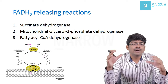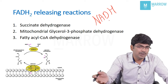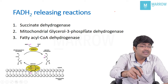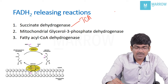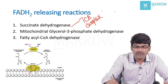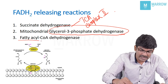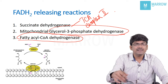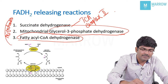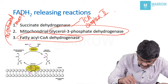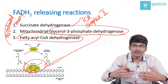You should remember the reactions in which FADH₂ is produced. There are only three reactions in which FADH₂ is released, so it is easy to remember. First is succinate dehydrogenase — a TCA cycle enzyme and also electron transport chain complex 2. Then mitochondrial glycerol-3-phosphate dehydrogenase, and fatty acyl-CoA dehydrogenase of beta oxidation. All these reactions are happening in the mitochondrial matrix, or more specifically, at the mitochondrial inner membrane side.